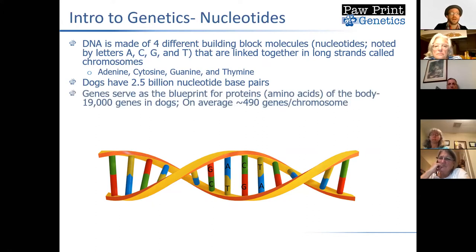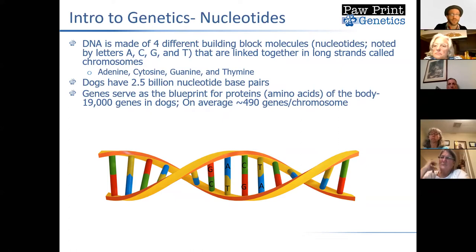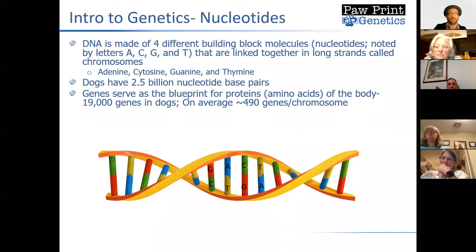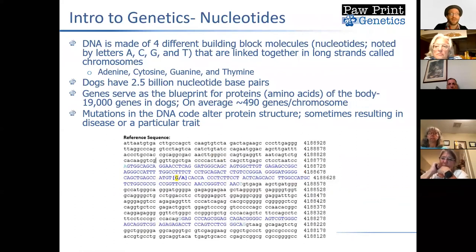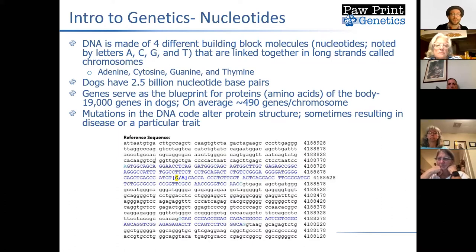As mentioned, genes serve as a blueprint for proteins — essentially the blueprint for everything made up in our body. There are about 19,000 genes in dogs, so on average roughly 490 genes per chromosome, though some chromosomes will have a lot more and some a lot less. Mutations in the DNA code can alter the protein structure, and in some cases that may result in disease or a particular trait.